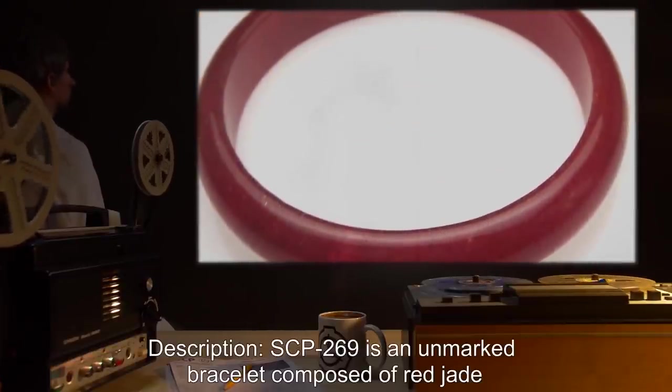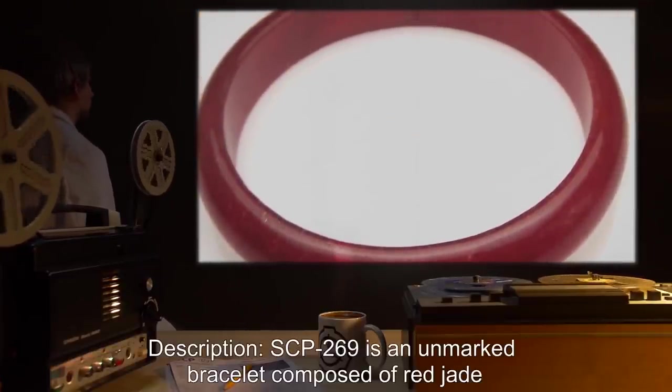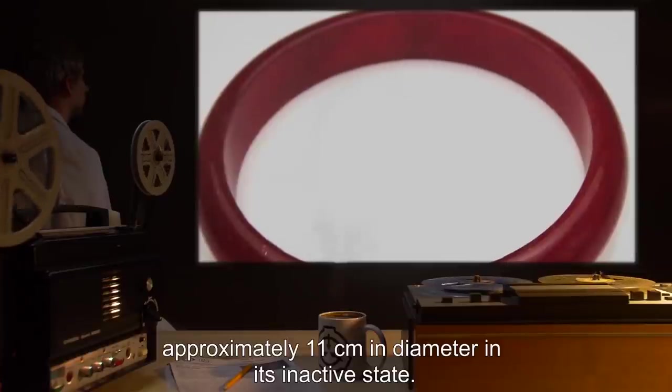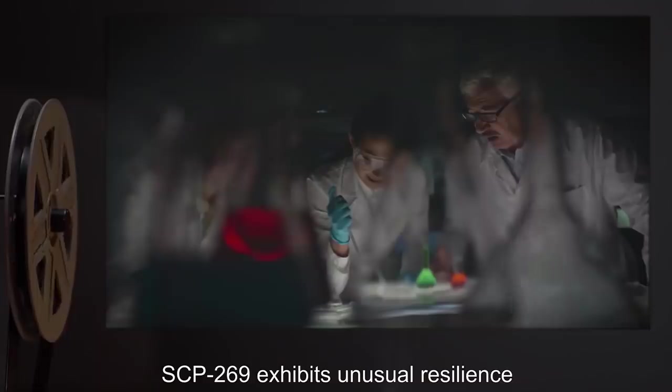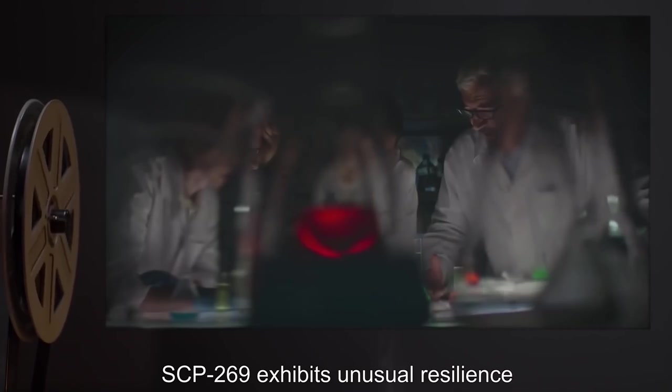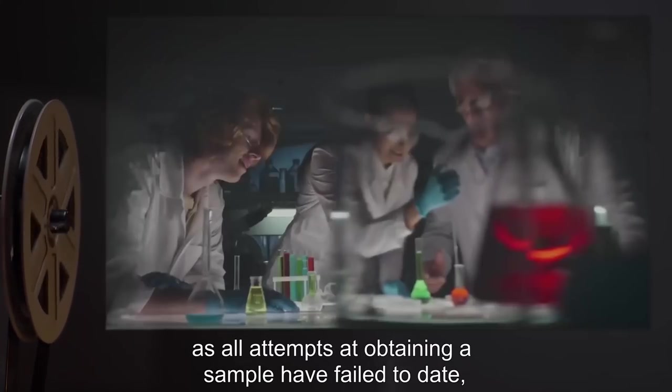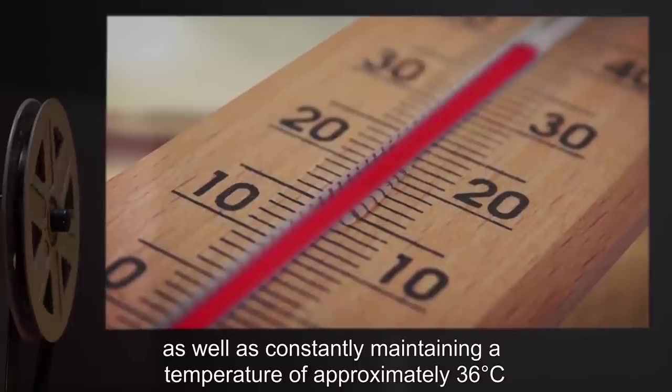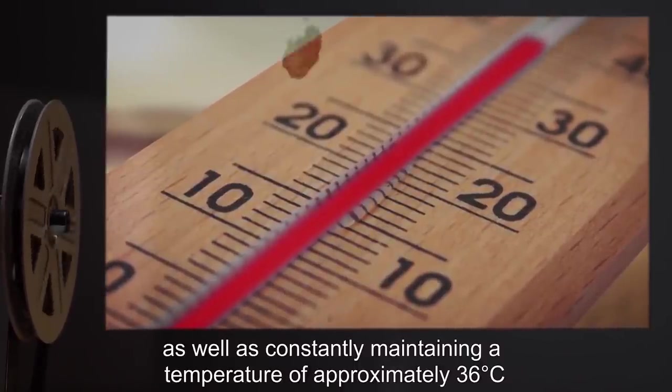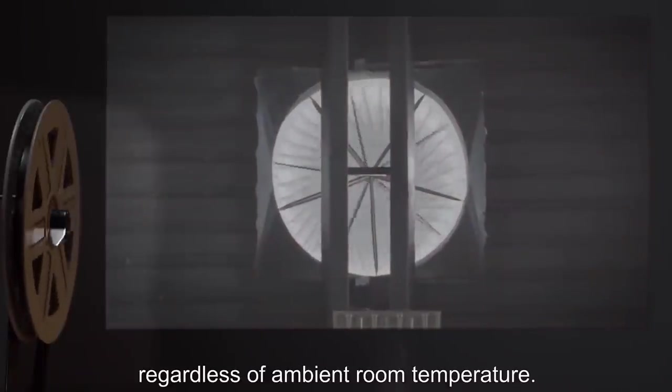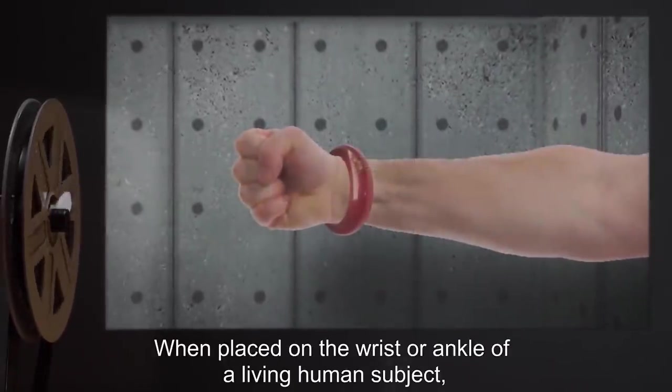Description: SCP-269 is an unmarked bracelet composed of red jade, approximately 11 centimeters in diameter. In inactive state, SCP-269 exhibits unusual resilience as all attempts at obtaining a sample have failed to date, as well as constantly maintaining a temperature of approximately 36 degrees Celsius regardless of ambient room temperature.